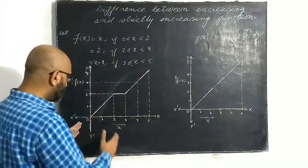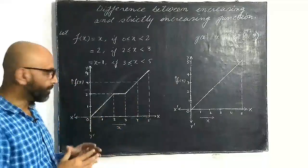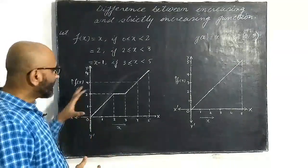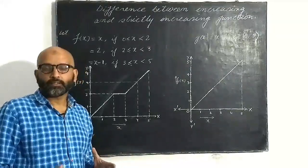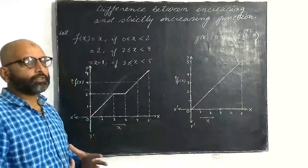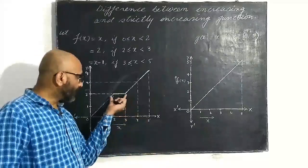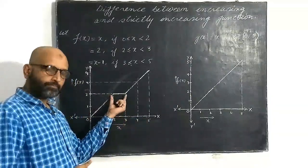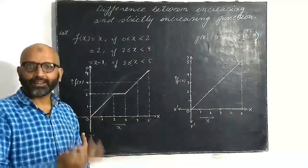If we talk about the behavior of f(x) throughout the interval 0 to 5 — it is never decreasing, yes it is increasing in parts, and in one part it is constant. So if a function is increasing in parts or constant in any part but never decreasing, we call such a function an increasing function. It is not a decreasing function at any point from 0 to 5, but in one sub-interval it is a constant function. Overall, it is an increasing function.